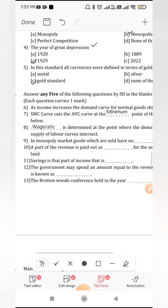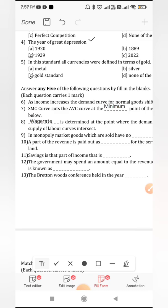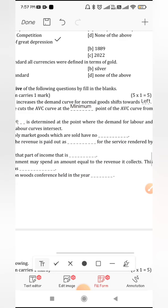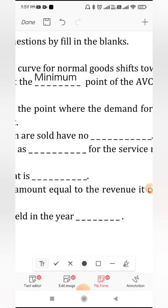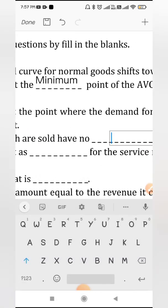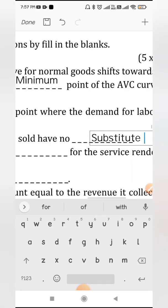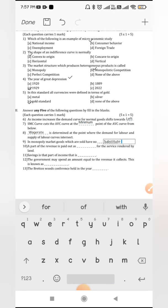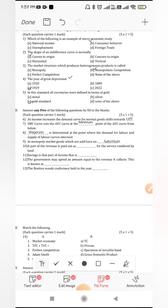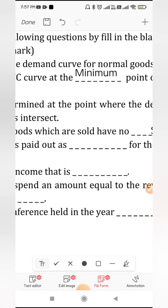Now let us move on to the next question. In monopoly, market goods which are sold have no competition or substitute. They do not have any alternative product. Substitute, they do not have any substitute product. That is the answer for the monopoly. A part of the revenue is paid out as dash for the service rendered by land. The answer will be rent.